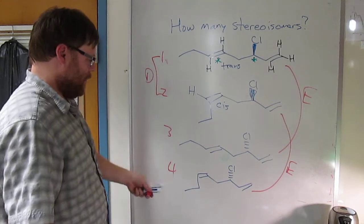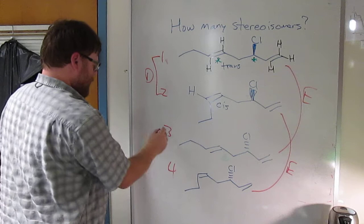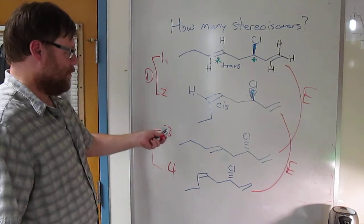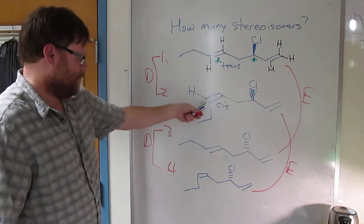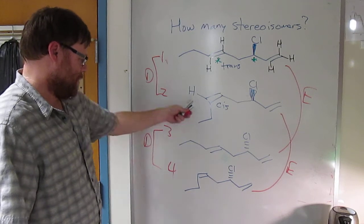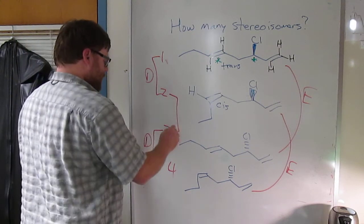What about three and four? Same thing, trans and cis, three and four are diastereomers. And then what about two and three? That's the last relationship we have. Once again, cis and trans, so two and three are also diastereomers.